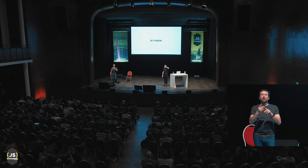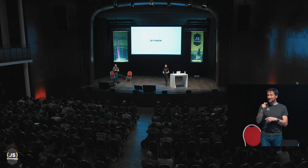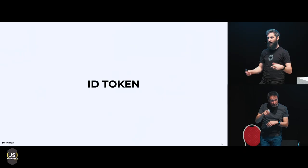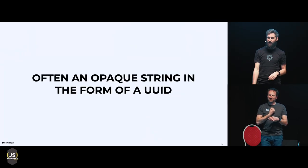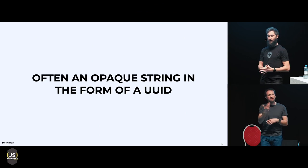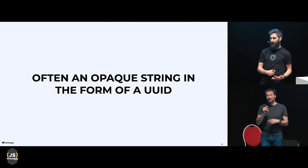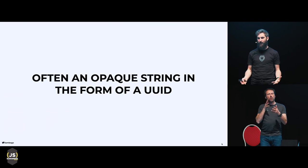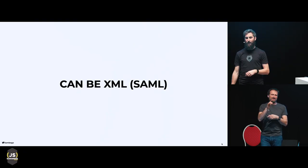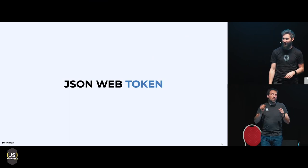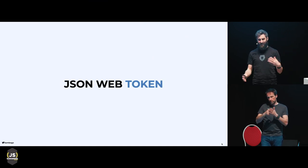An ID token usually contains some information about the identity of a user. These tokens are often an opaque string in the form of a UUID — a string with seemingly random characters that doesn't contain much information except that it's an ID. They can also be XML if you're using SAML, for example. But they can also be JSON Web Tokens, and that changes the game a bit because a JSON Web Token can contain a lot of information, whereas a UUID is just a representation of an ID.